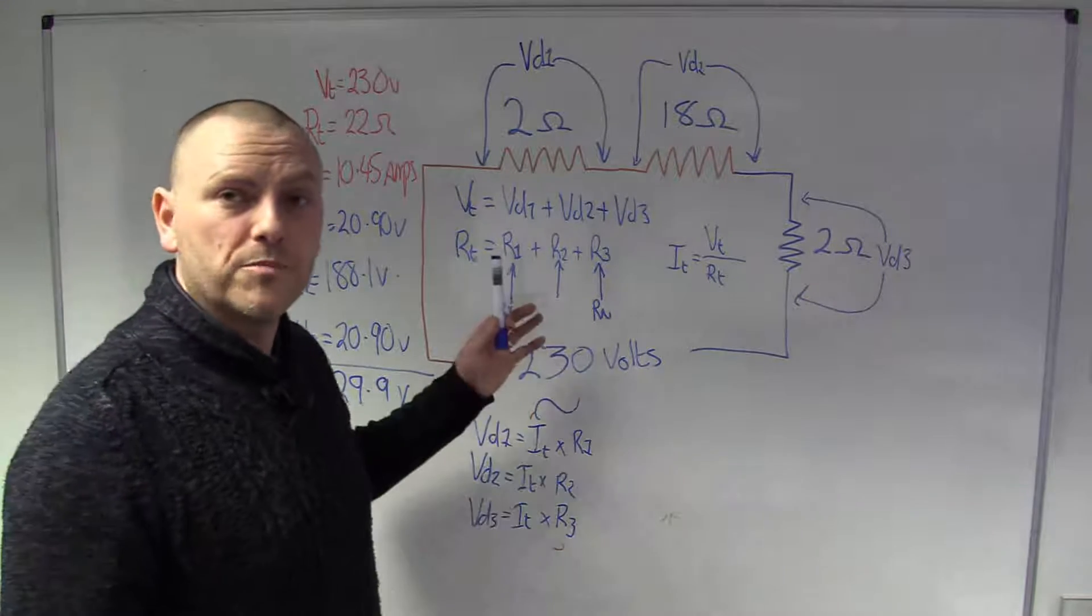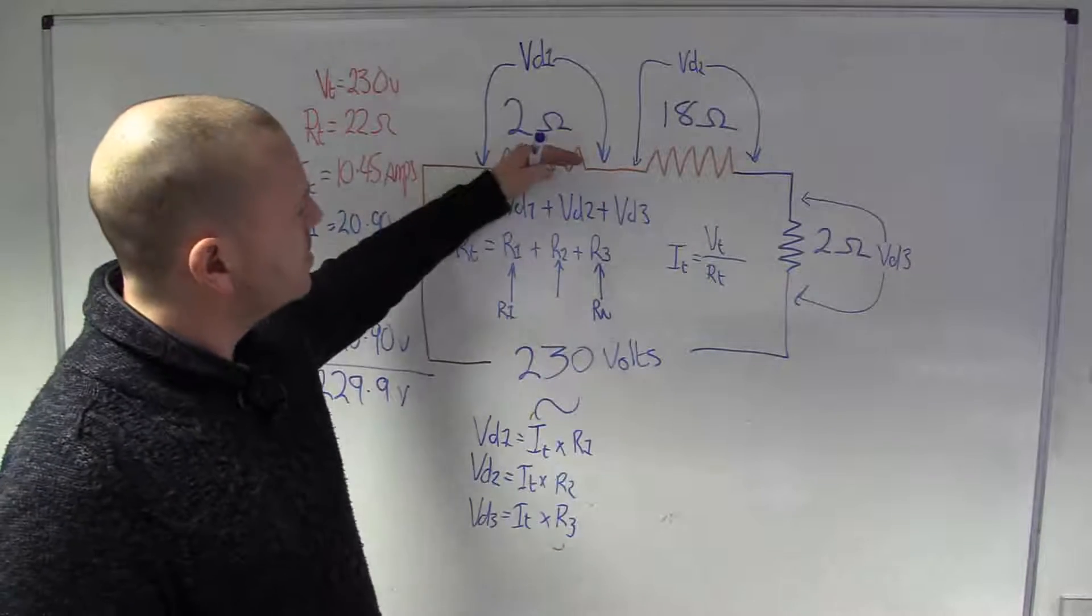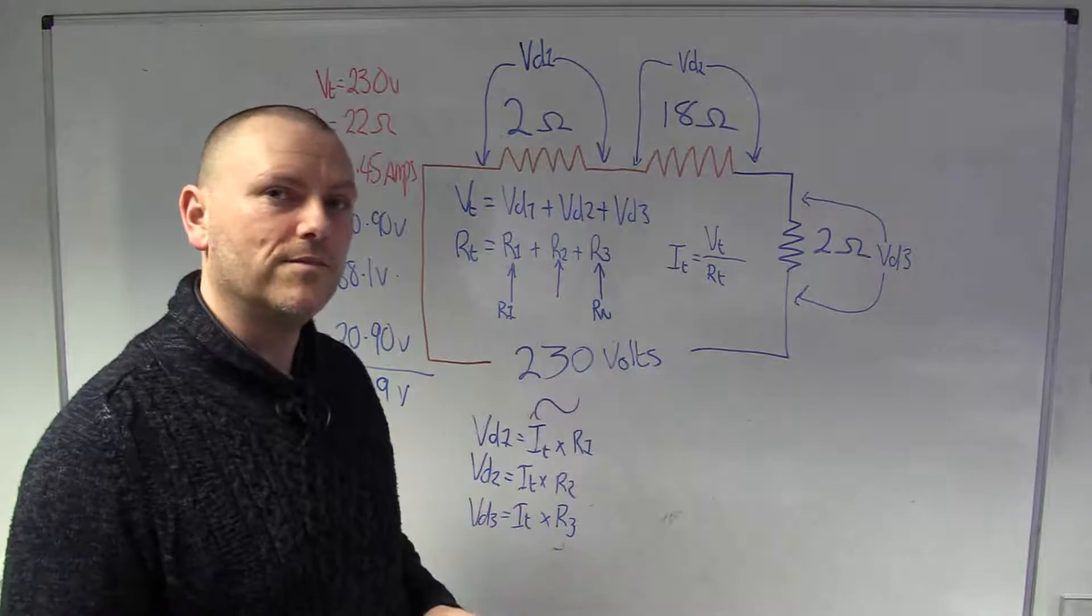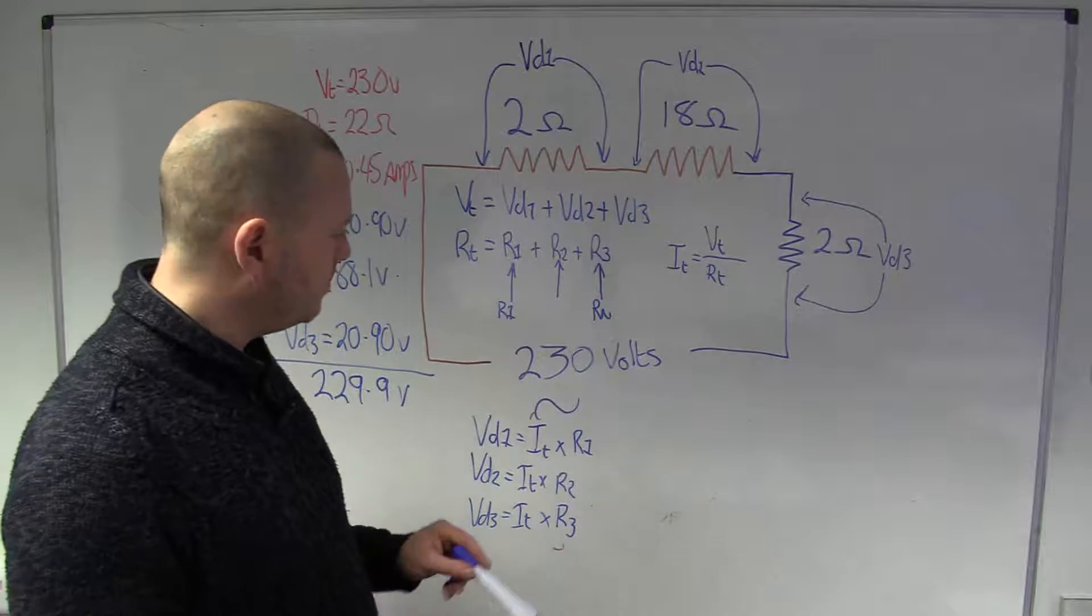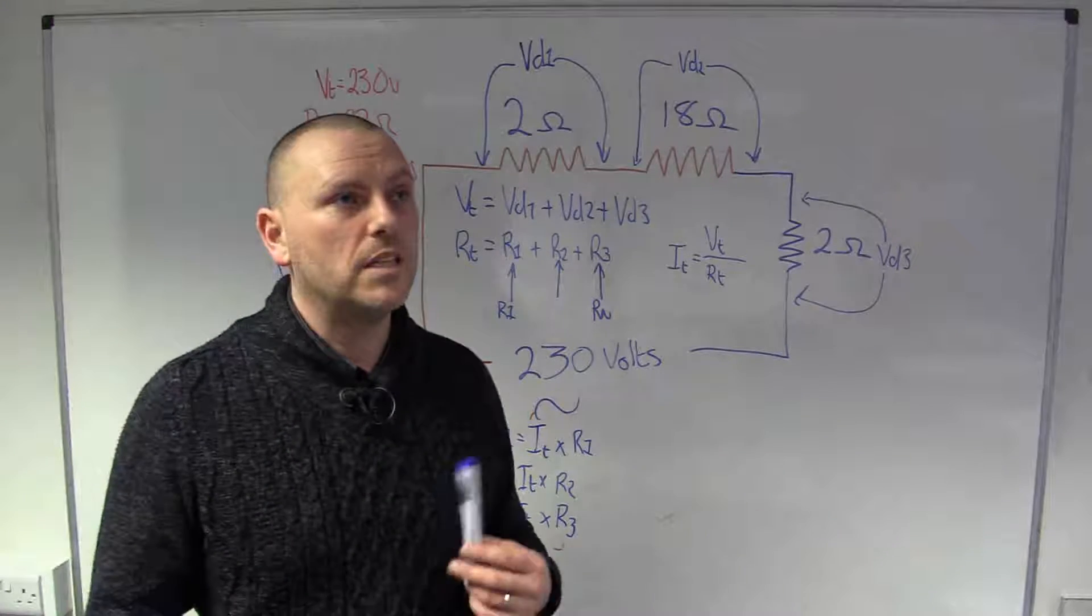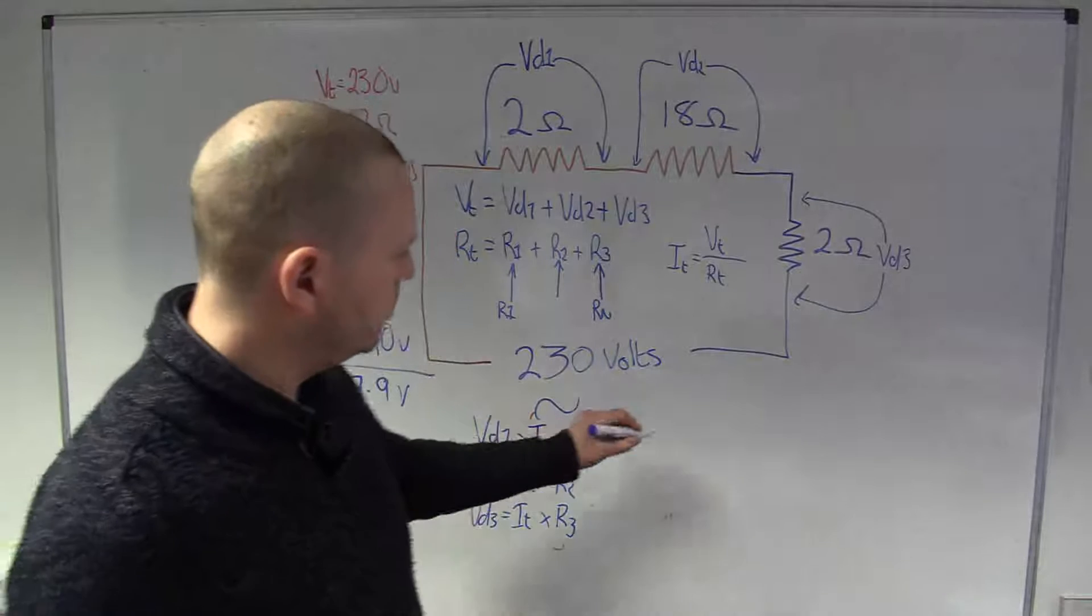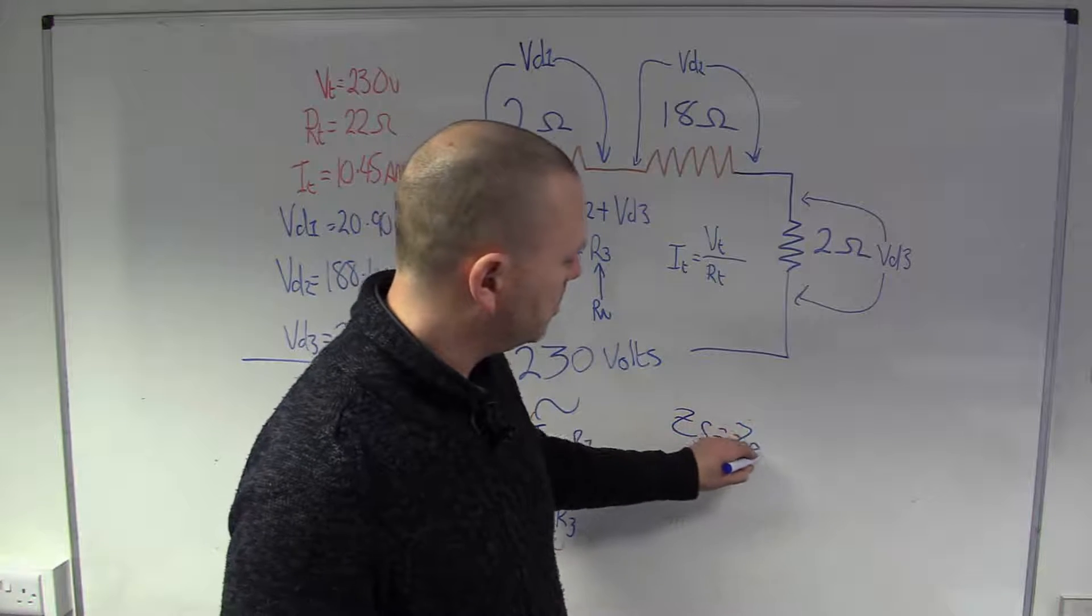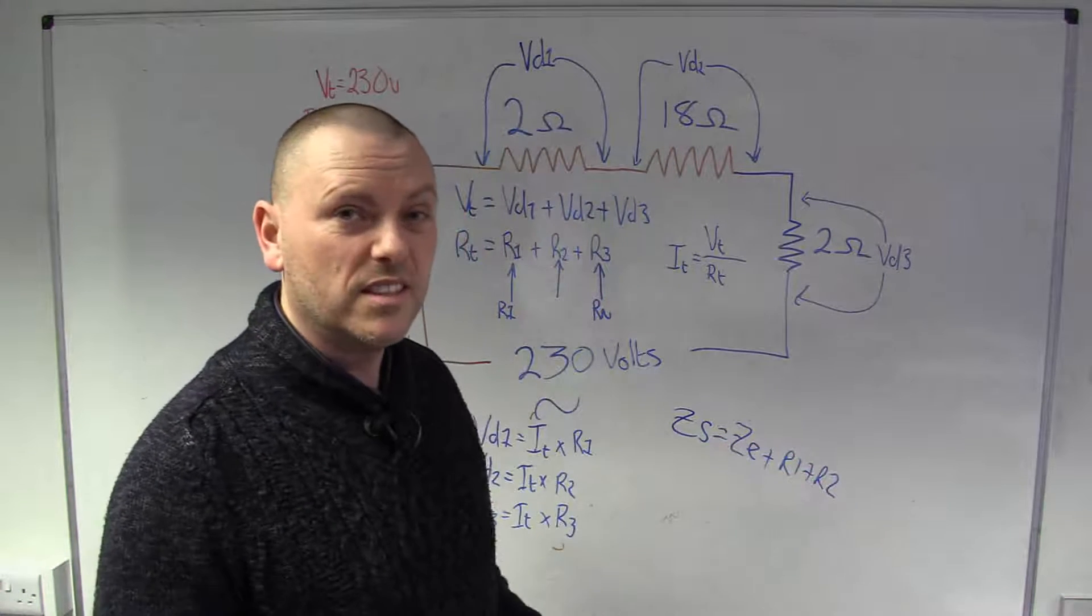So in the real world this could represent an actual circuit we could be adding up the resistance of our live cable, the resistance of our neutral cable and then calculating the volt drop based on the design current, exactly like this really. Or we could be talking about maybe the R1 and R2 measurements. You know when you get into it you'll find this equation pop up quite a lot.